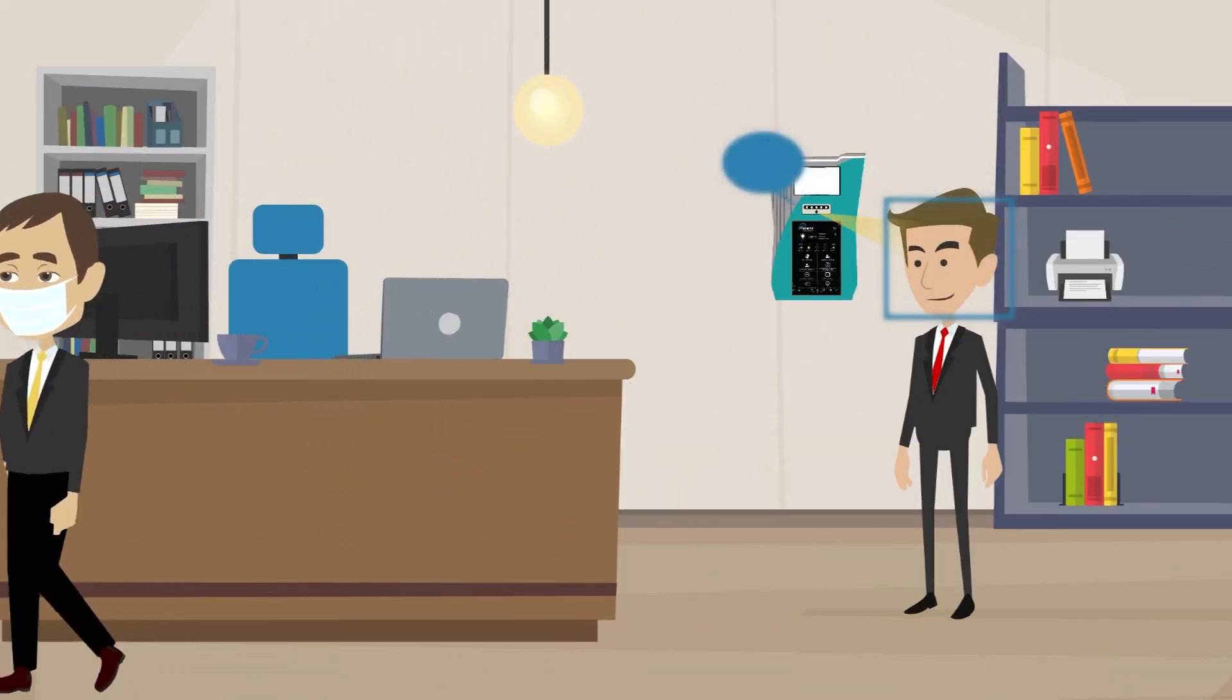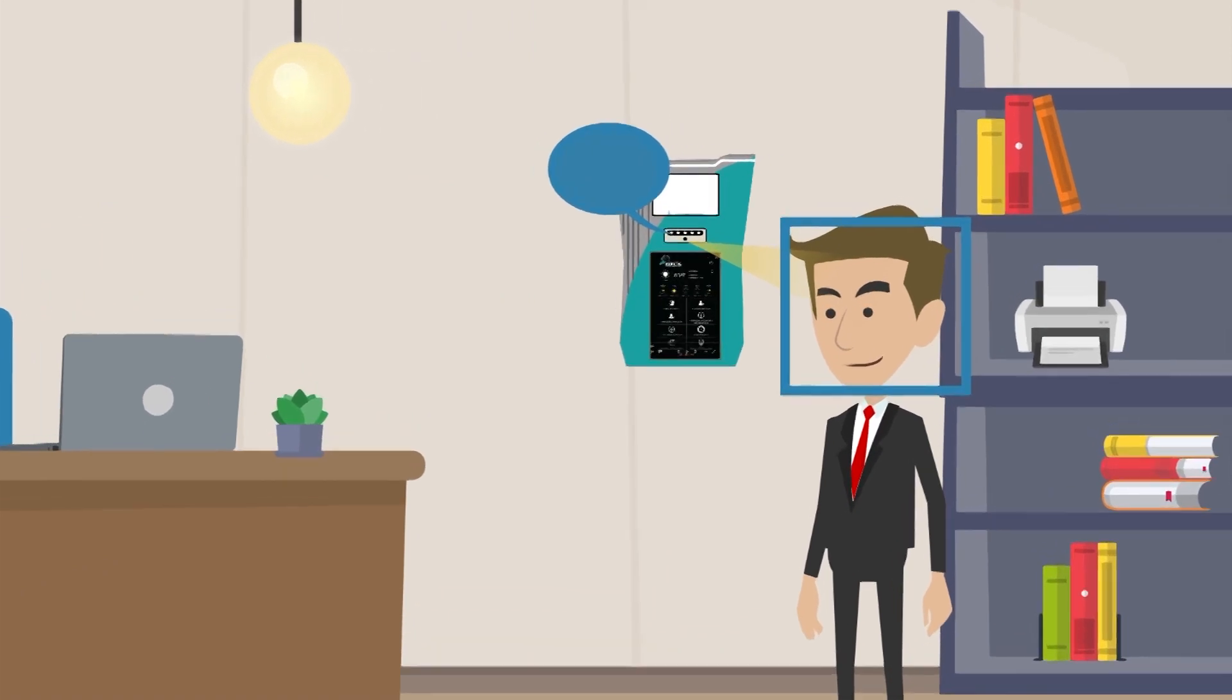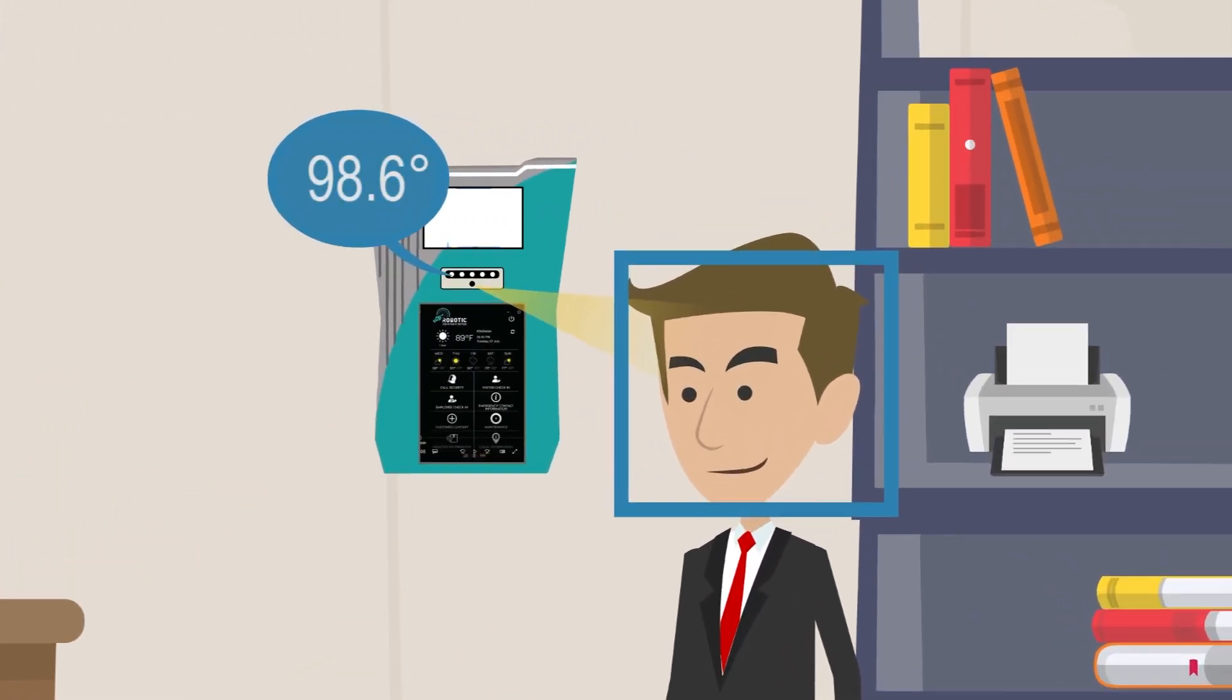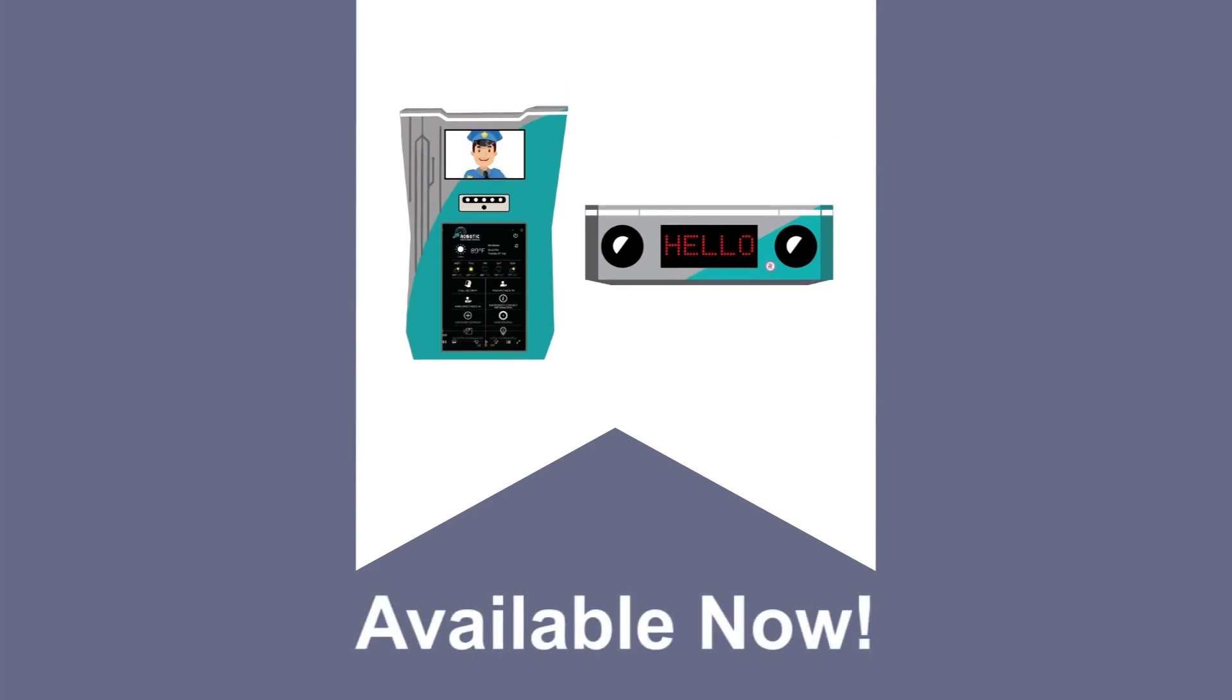Wally can even take someone's temperature, print daily access badges, and if necessary, alert the security staff if someone is not granted permission to enter for health reasons or does not have a face mask.